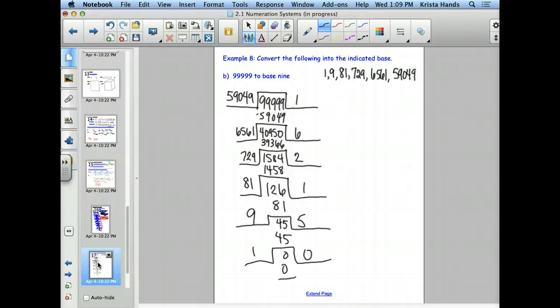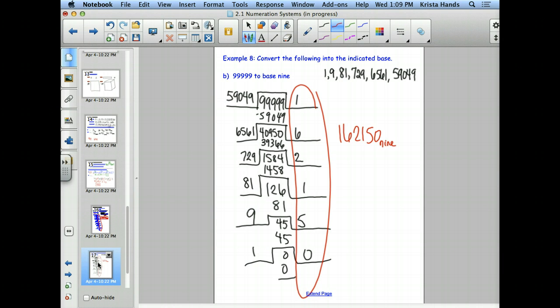So again, the beautiful thing about this one is that the solution is everything on the right. So it's 162150. And then what do I need to put the subscript 9, the word 9 next to it, to indicate that that is the number for the base 9? What if I had done this and my answer had a 9 in it? It would be wrong.